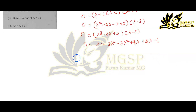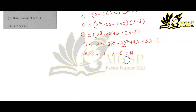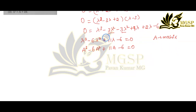Rewriting this expression: λ³ - 6λ² + 11λ - 6 = 0. Now rewrite this in terms of matrix A: A³ - 6A² + 11A - 6I = 0.